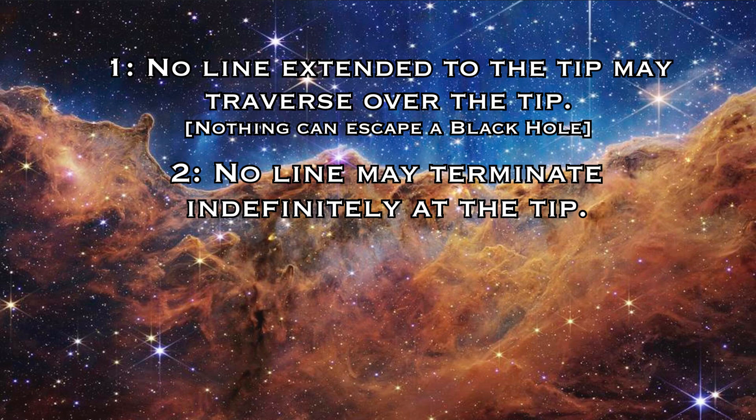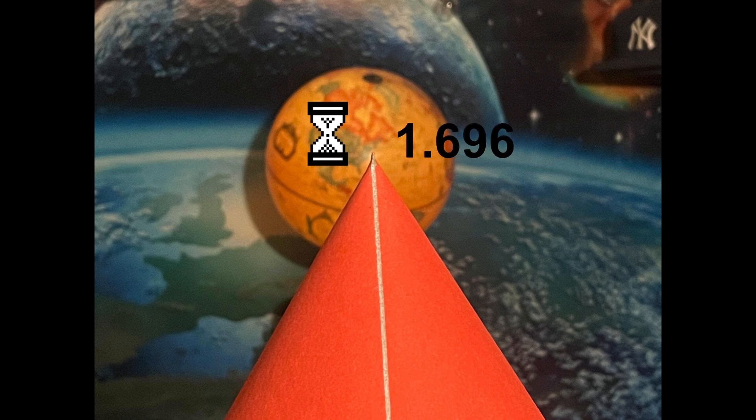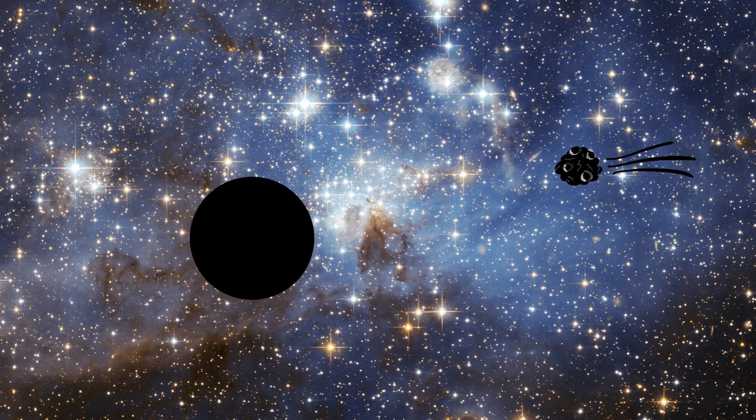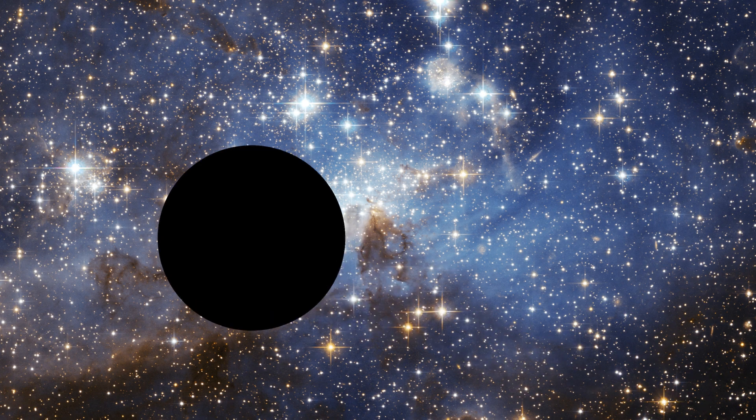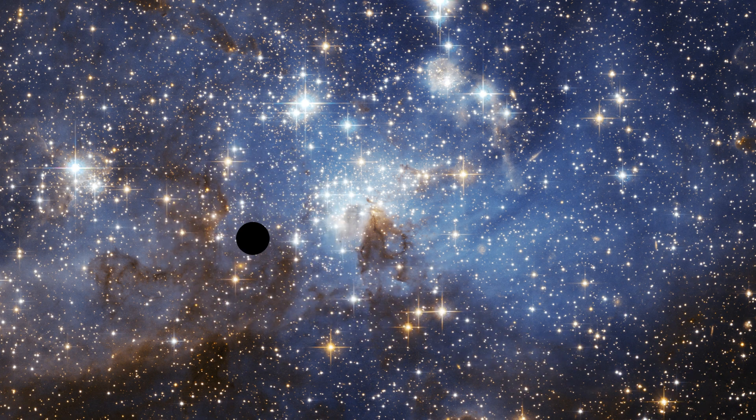The second is that no line may terminate indefinitely at the tip. So we cannot just extend a line to the tip, have it remain there forever, and call it a day. This is because Stephen Hawking showed that black holes eventually evaporate, leaving nothing behind. This would eventually force the path to extend on somewhere.